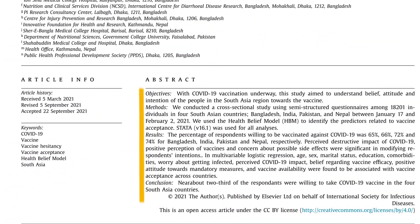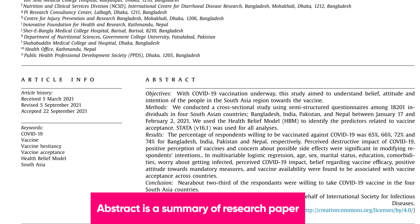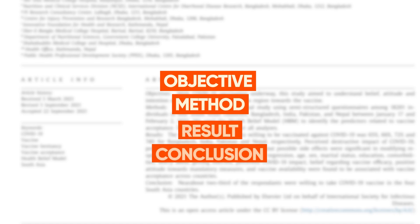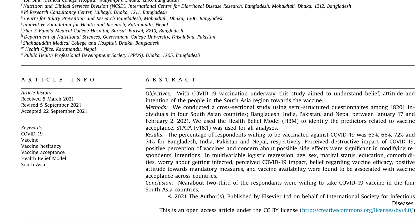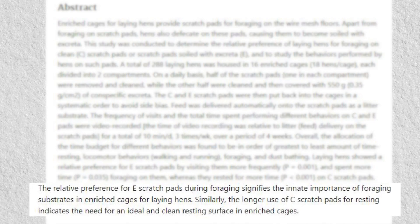The second section is the abstract, which is a summary of your research paper. You are going to mention four things: objective, methods, results, and conclusion. In this example, the abstract has proper headings for each of those four parts. In other abstracts, you may not see headings, but the first few lines are the objective, the next few are methods, then results, and finally conclusion. That's how you summarize your research paper in an abstract.